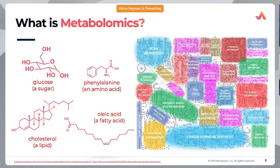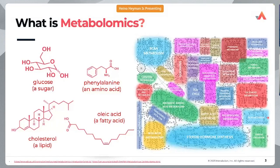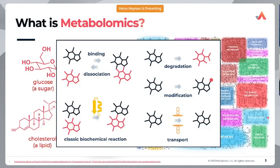But what about all the other metabolites, small molecules, and pathways implicated in biology? At Metabolon and in metabolomics in general, the focus is a holistic approach — looking at all the different pathways, how they are interlinked, and the metabolisms involved to create a specific phenotype. Metabolomics is unique in that it captures the dynamic nature of a phenotype, including degradation, modification, and transport of metabolites across different organs and cell types.